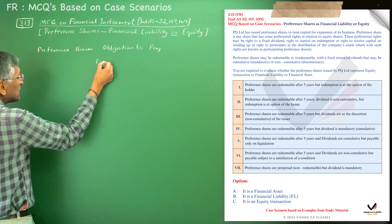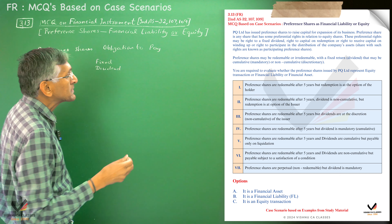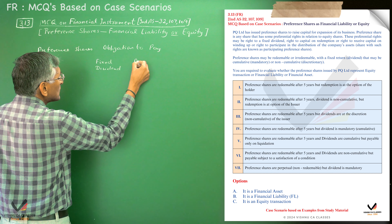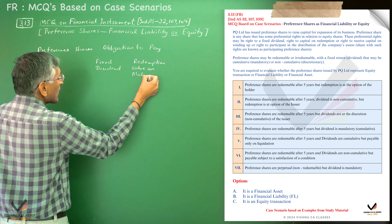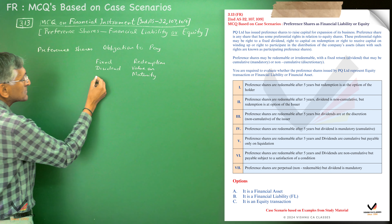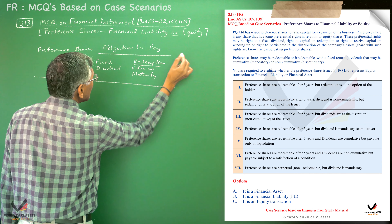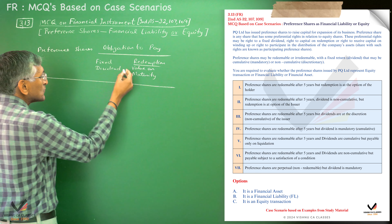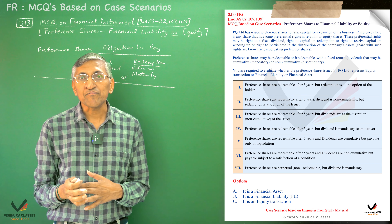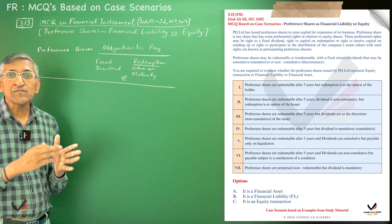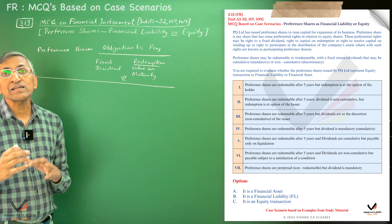There are two possible obligations: first, the company has to pay a fixed dividend, and second, the company has an obligation to redeem the preference shares and pay the redemption value on maturity. If either or both of these features is present, it will be classified as a financial liability. But if there is no fixed obligation to pay dividend and no fixed obligation to redeem on maturity, it will be treated as an equity transaction.